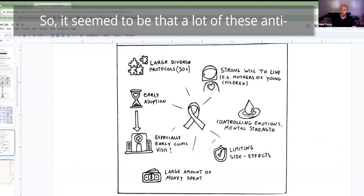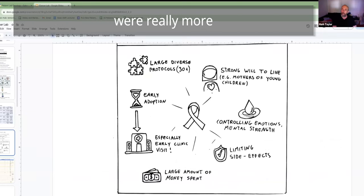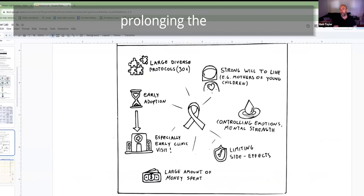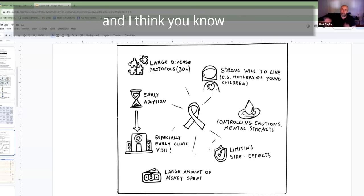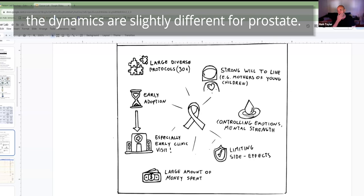It seemed to be that a lot of these anti-cancer approaches that people talk about were really more prolonging the life of the primary treatment. Now, this is a specific pancreatic trial I ran. I think for prostate, it would probably be a bit different because you've got wait and watch as an option, and the dynamics are slightly different for prostate.